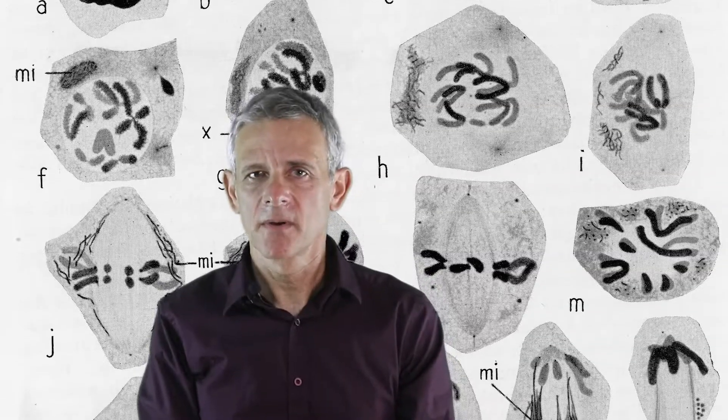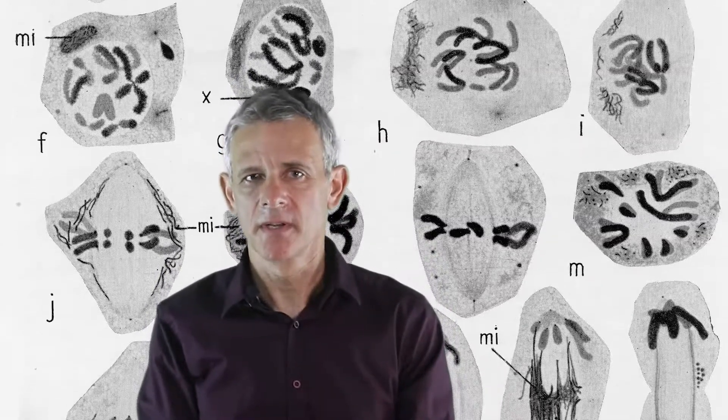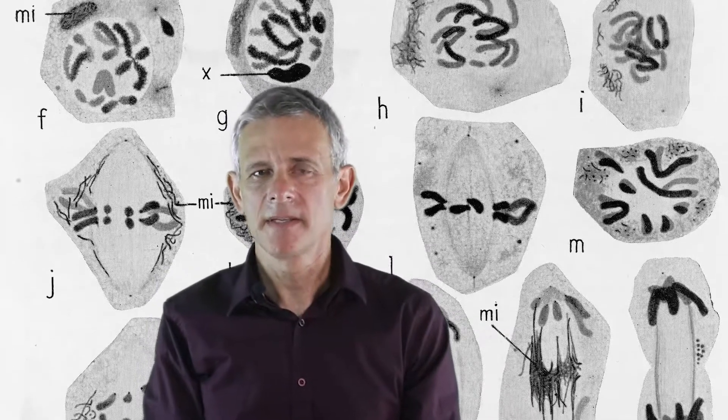The first reason is that homologues are segregated randomly during the first meiotic division. Let us demonstrate this by an easy analogy.